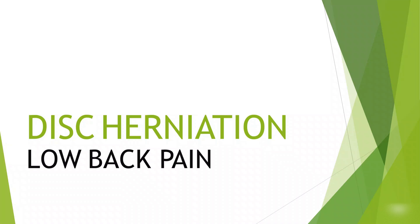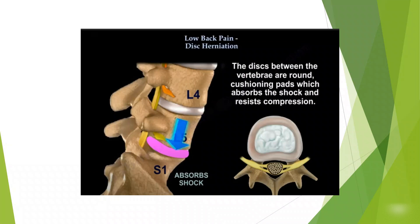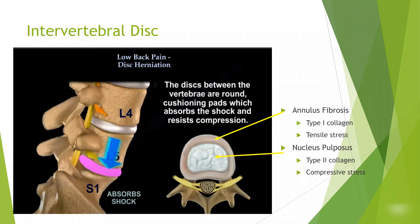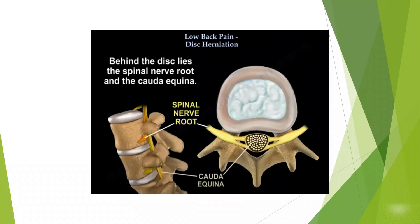Low back pain and disc herniation. The spine is composed of vertebrae, and in between the vertebrae lies the discs. The discs are cushions which absorb shock and resist compression. The discs are made of two parts: a tough, strong outer layer called the annulus fibrosis, and a softer, gelatinous part in the middle called the nucleus pulposus. Behind the disc lies the spinal nerve root and the group of nerves called the cauda equina.